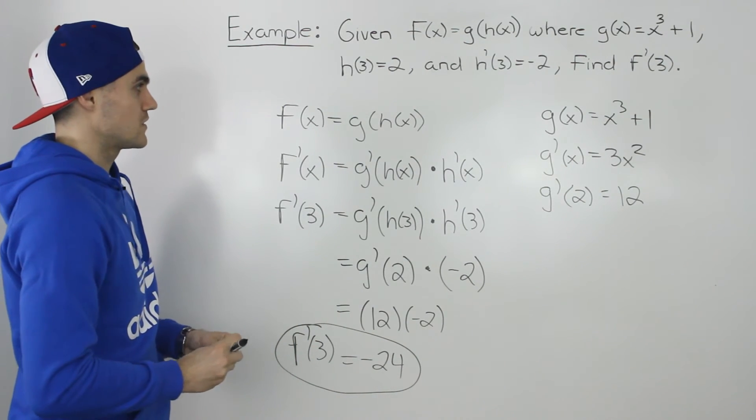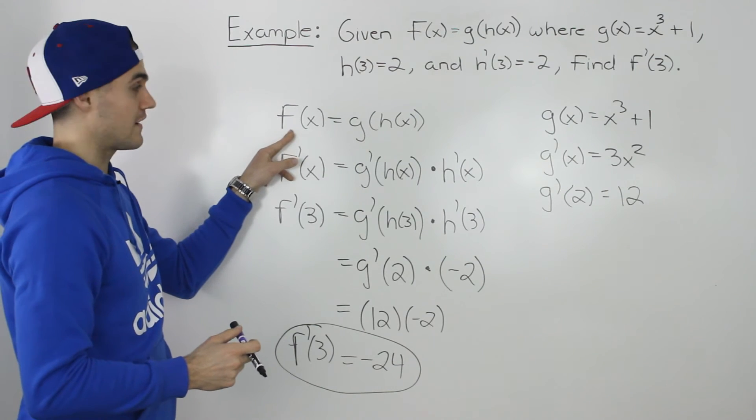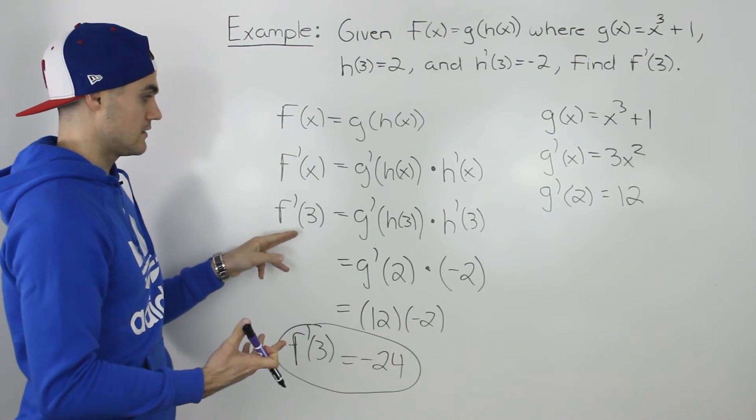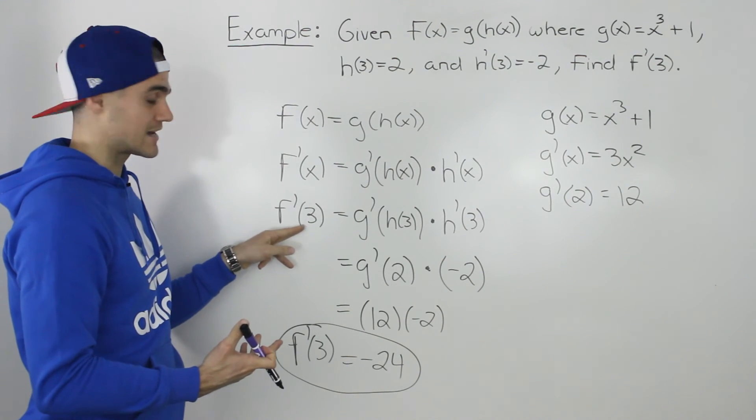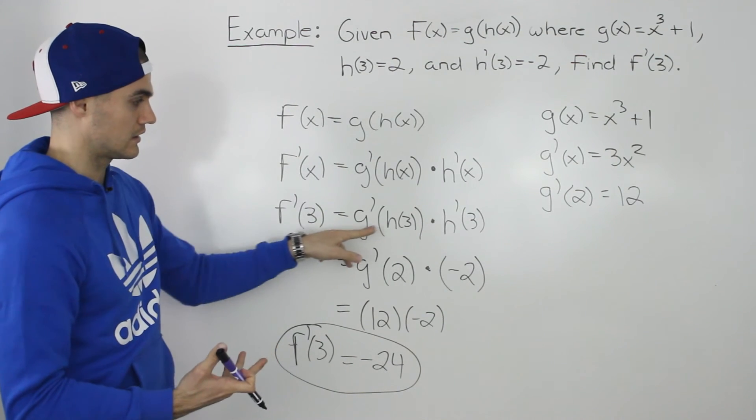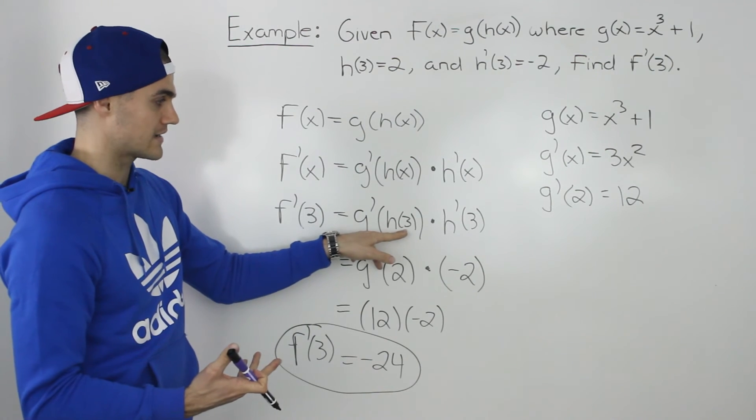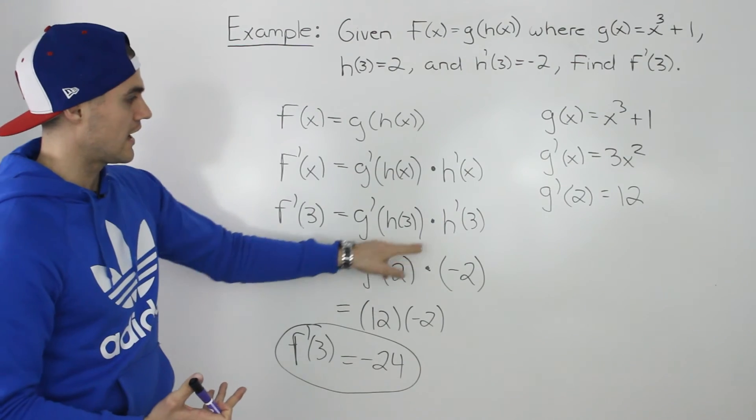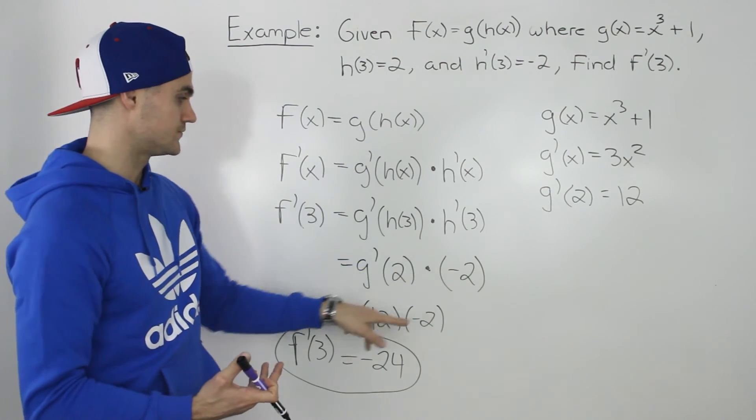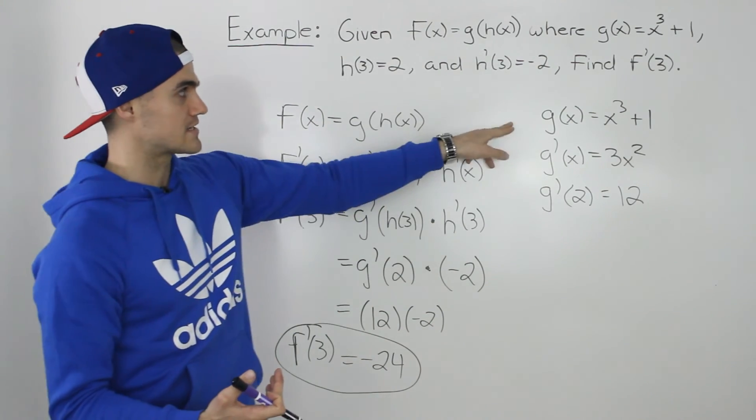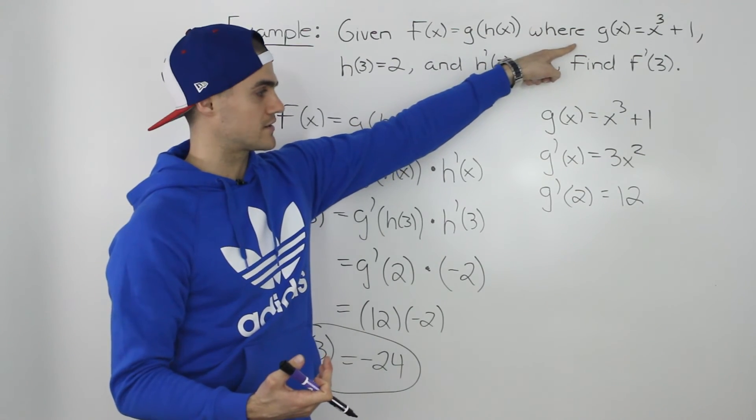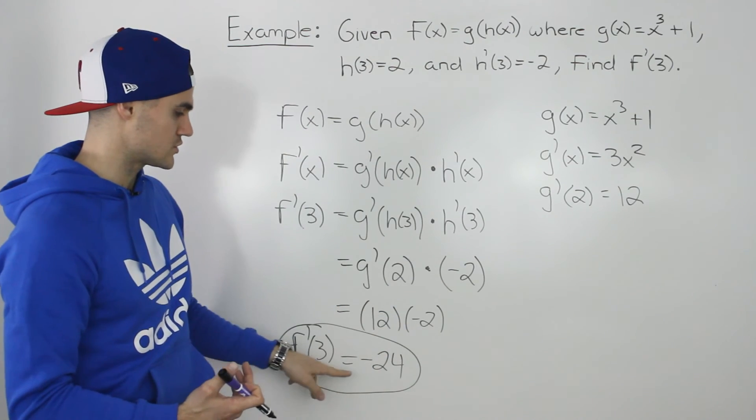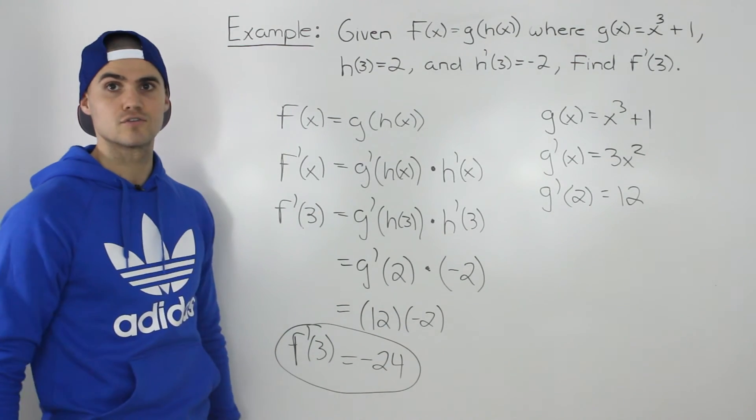The first thing we did was find the general derivative of f(x), and because it's a composite function, we applied the chain rule. Then we had to find the derivative of f(x) at x = 3, so we plugged in 3 for all x values. h(3) is given as 2, h'(3) is given as -2. Then g'(2), we calculated with the function given for g(x). Find the derivative, plug in 2. We get 12 × -2, so our final answer is -24.